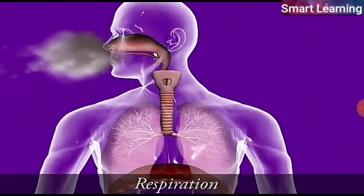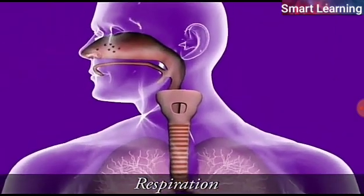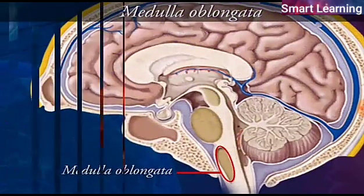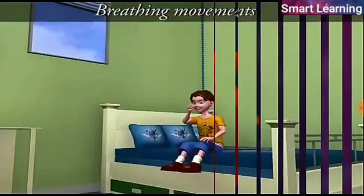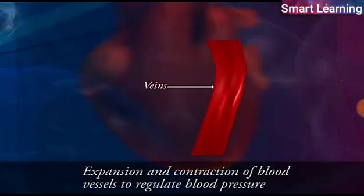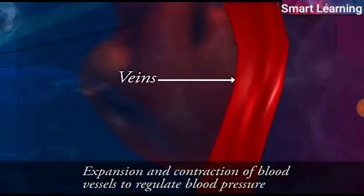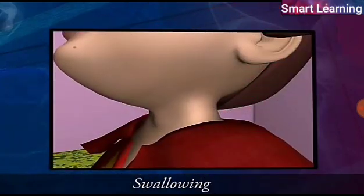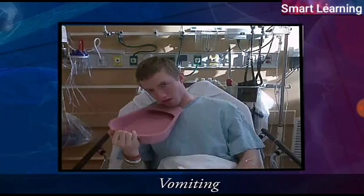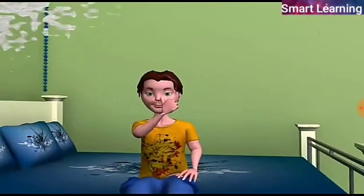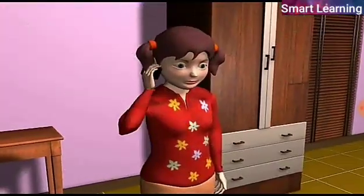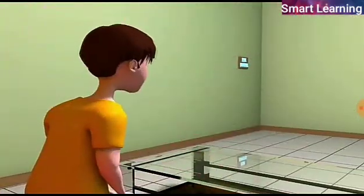The pons controls some aspects of respiration. The medulla oblongata controls the rate of heartbeat, breathing movements, expansion and contraction of blood vessels to regulate blood pressure, as well as swallowing, coughing, sneezing, and vomiting. The human brain is a very important part of our central nervous system and allows us to think and take actions based on thinking.